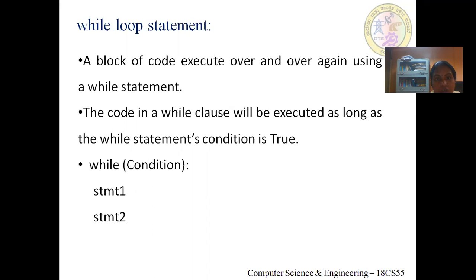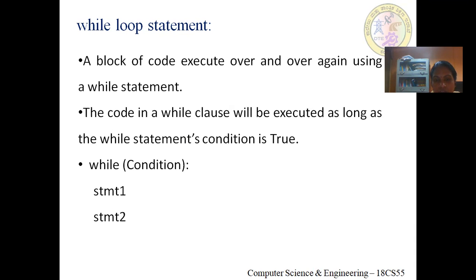The while loop executes a block of code over and over again. It checks for a particular condition; if the condition is true, the same block will be executed repeatedly. The code in a while clause executes as long as the while statement condition is true. The syntax is: the while keyword followed by the condition and a colon, then the block of statements. Once the condition is false, execution exits the while loop.